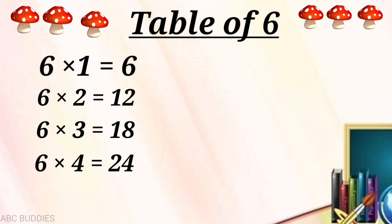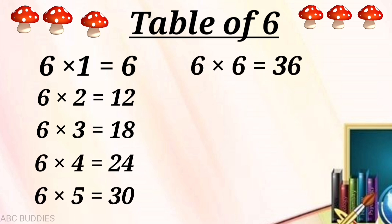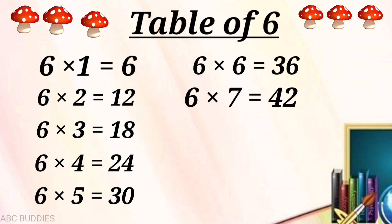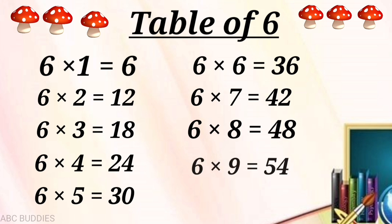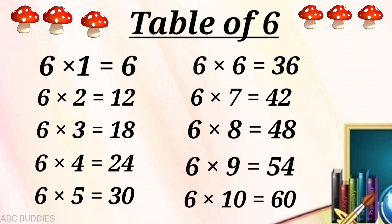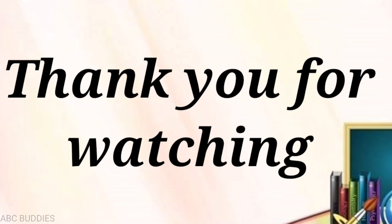Six fours are twenty-four. Six fives are thirty. Six sixes are thirty-six. Six sevens are forty-two. Six eights are forty-eight. Six nines are fifty-four. Six tens are sixty.